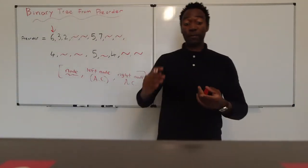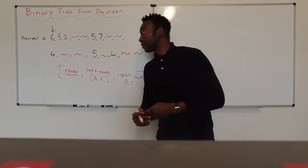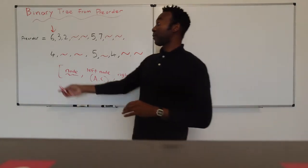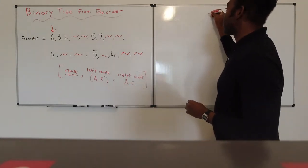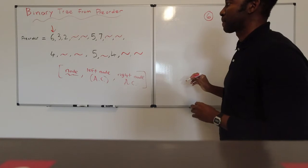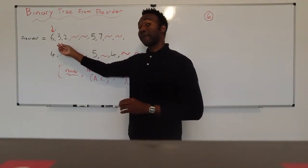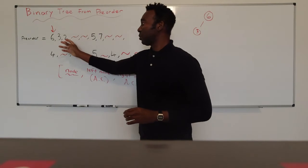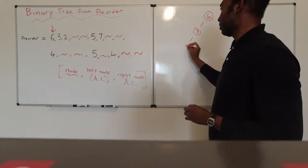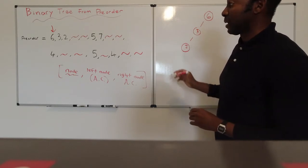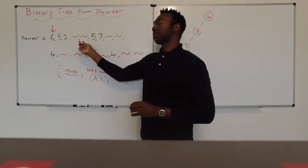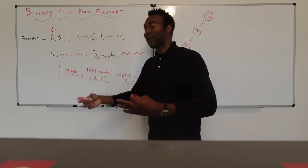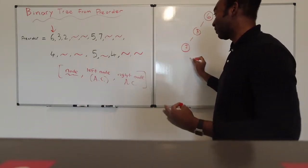Now that we have the problem, let's do the very first part by hand. The very first element is our root element, so at the top of our tree we'll have a 6. The element directly to the left is going to be the left node, so we'll have a 3 there. Then the 2 is going to be the left node of the 3. Now we have a tilde and a tilde here, which indicate that this 2 is actually a leaf — there's nothing below it.